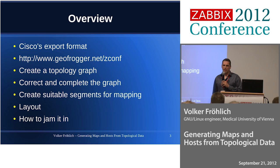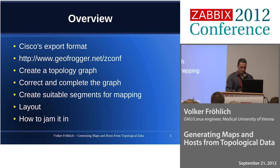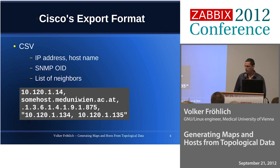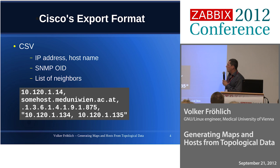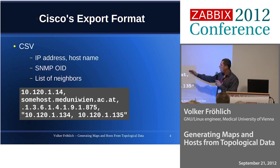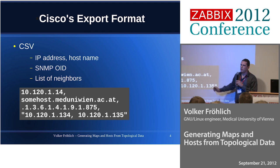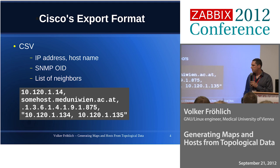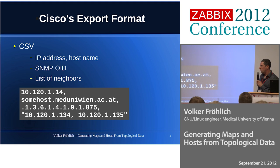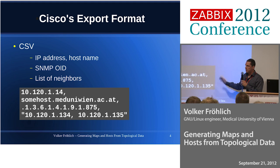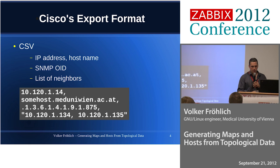I will then discuss how to get all that inside Zabbix and how we can keep it up to date. The CSV format is quite easy: one host per line, with IP address, host name, SNMP IP or ID to identify what kind of device it is, and a list of all neighboring IP addresses. There is some more information but I left that out because it is not important.